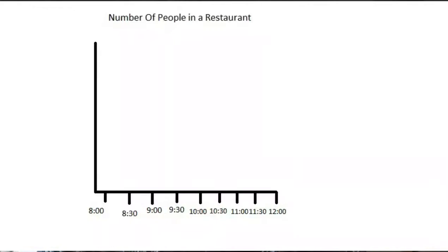First, let us label the x-axis with the time observed in our table: 8 a.m., 8:30 a.m., 9 a.m., 9:30 a.m., 10:00, 10:30, 11:00, 11:30, and finally 12:00.